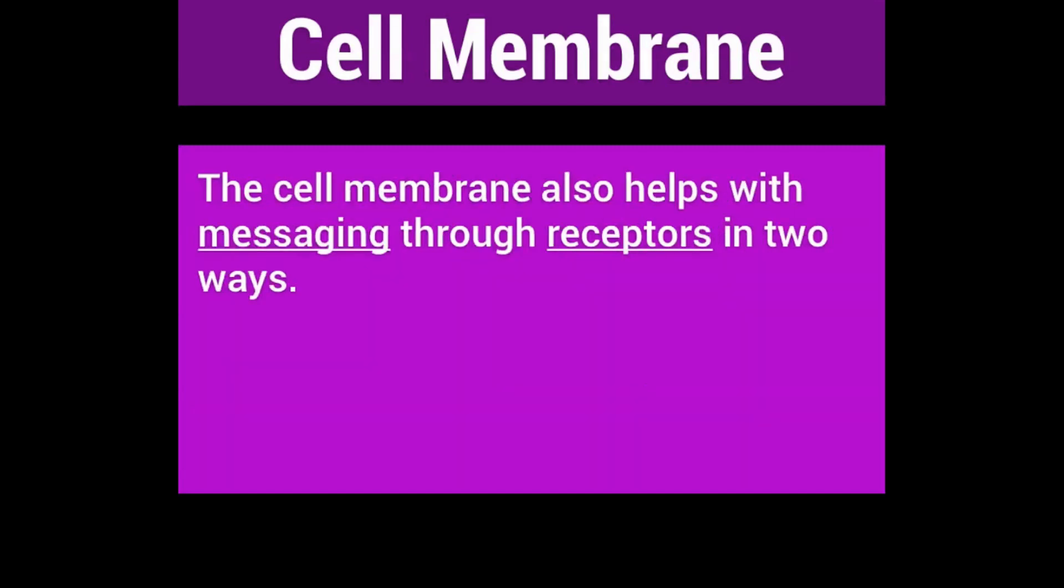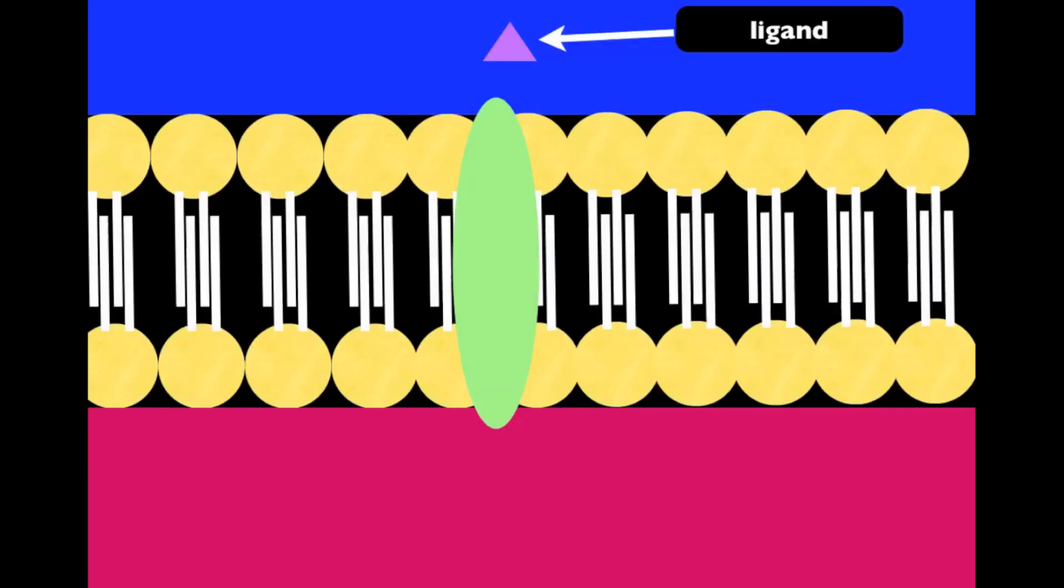The cell membrane also helps with messaging through receptors in two ways. There are two types of receptors. The first kind of receptors is kind of like when two people are gossiping about some information. There is this thing called a ligand, which is like a juicy piece of gossip that you want to get across to tell someone about.